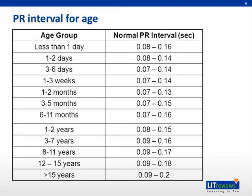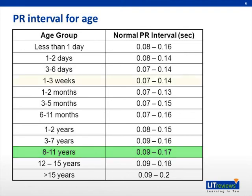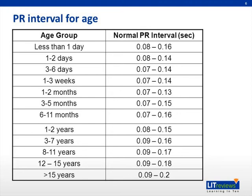This is a chart outlining the different PR intervals based upon the age of the patient. The normal PR interval varies with age. Therefore, a PR interval of 0.16 seconds is normal in an 8-year-old, but constitutes first-degree AV block in an 8-day-old. Patients older than 15 years of age with a PR interval greater than 0.2 seconds, or 200 milliseconds, have first-degree AV block.